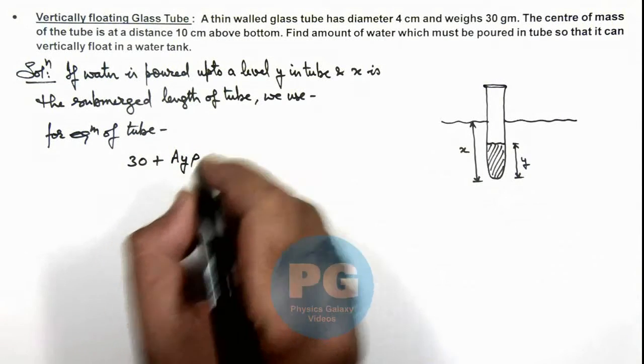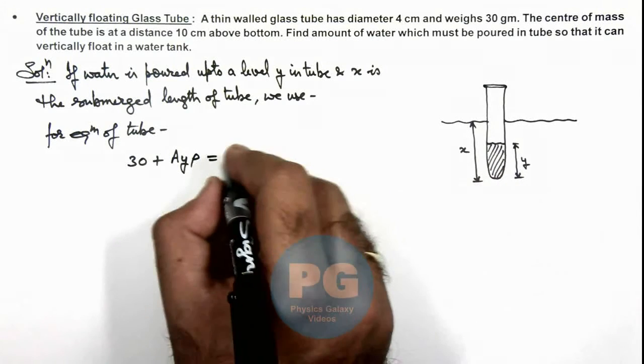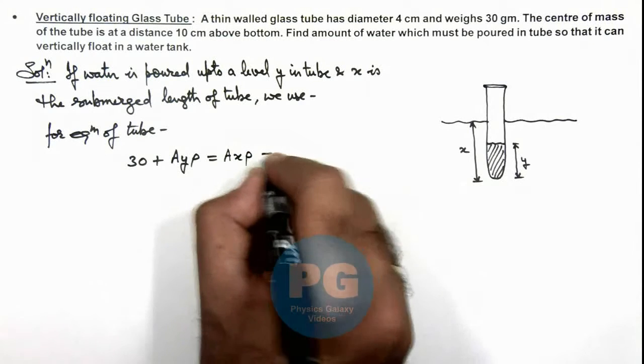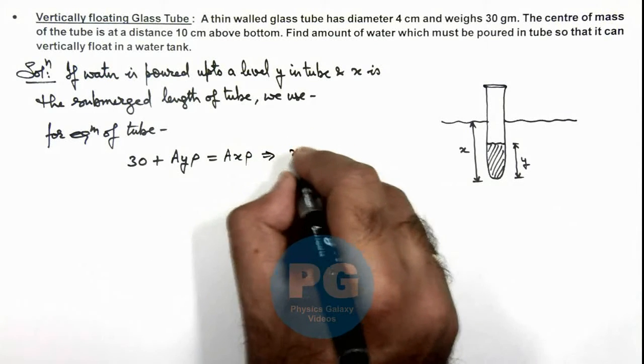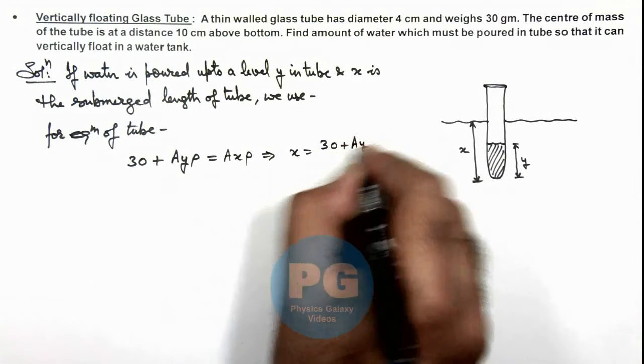And this must be equal to the mass of water displaced by this tube that will be A_y times x times rho. And this gives us the value of x is equal to 30 plus A_y times y divided by A_y.